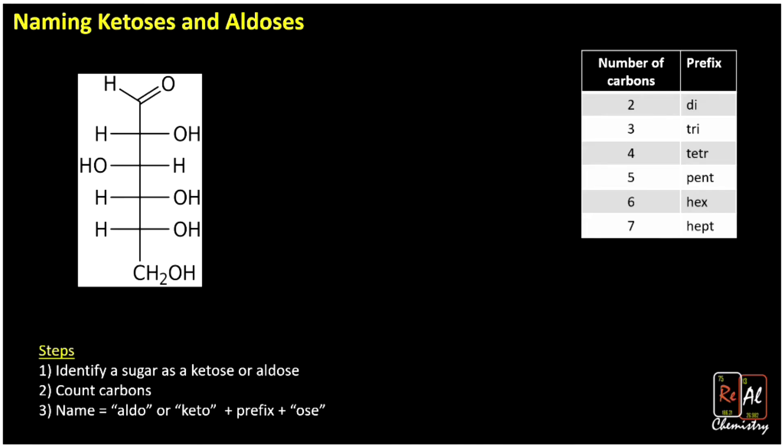So when we name ketoses and aldoses, here are the steps we follow. We first identify the sugar as a ketose or an aldose. Then we count the carbons. To name that, we name it aldo or keto, depending on which functional group it has, plus whatever prefix we got, which is the number of carbons. And we add the ending -ose.